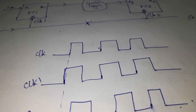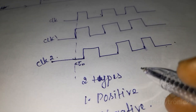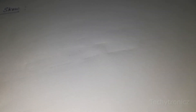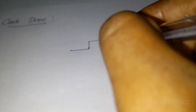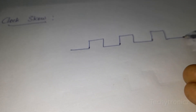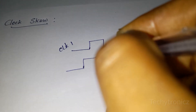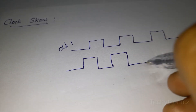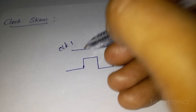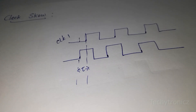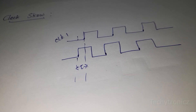For negative clock skew, the data flow and clock flow are in opposite directions. This graph shows clock 1 and the reference line, indicating the delay present in negative clock skew.